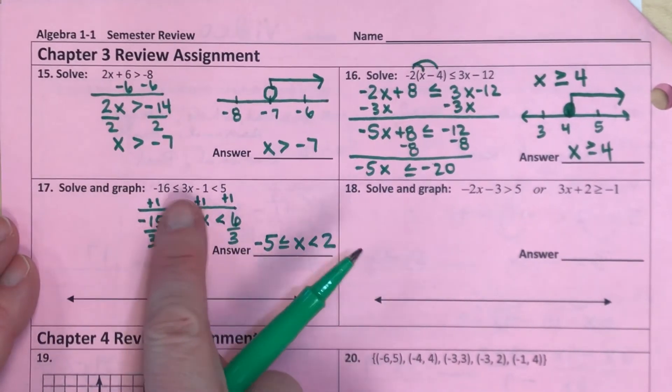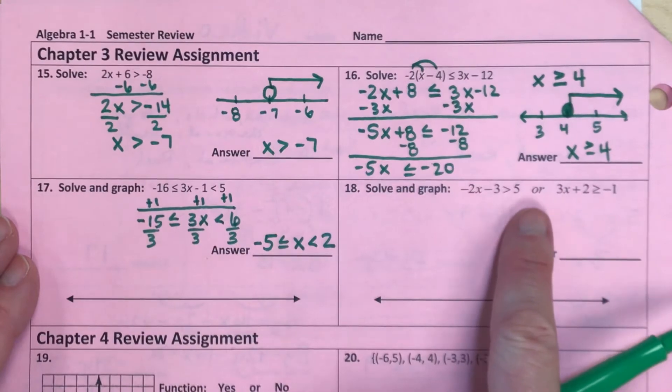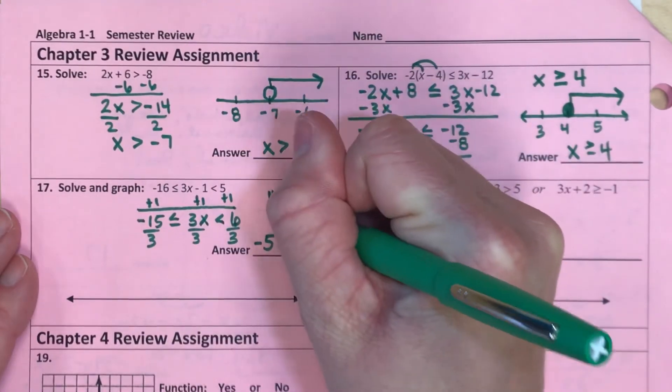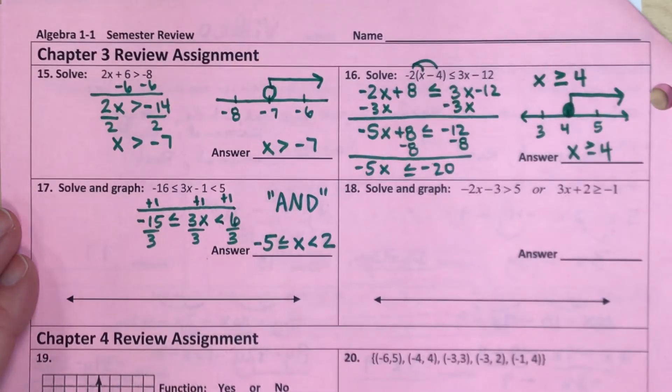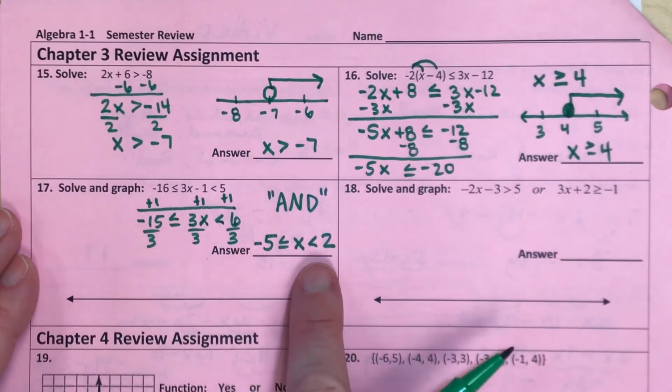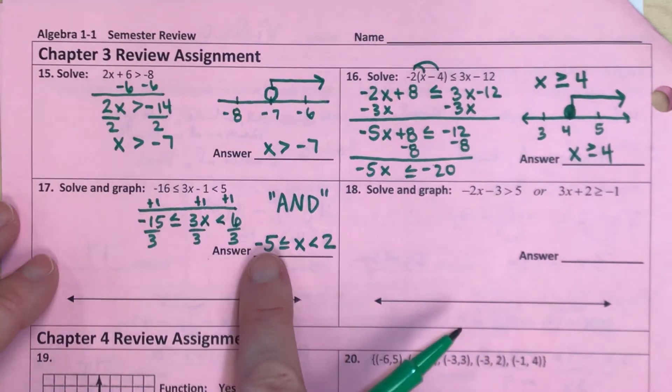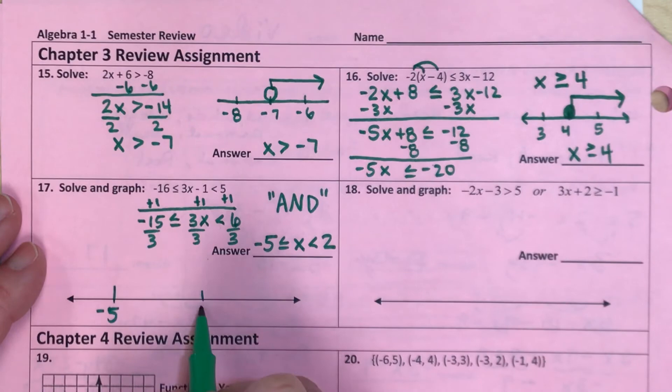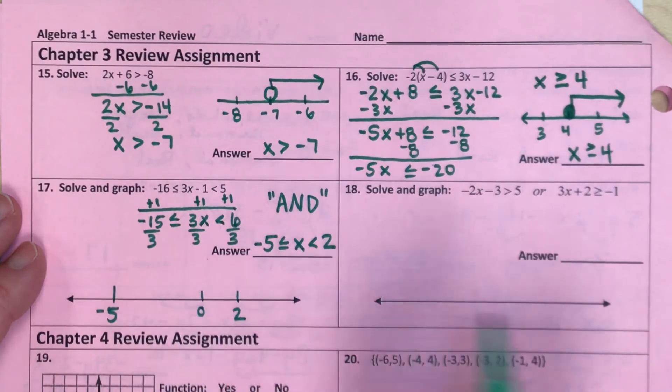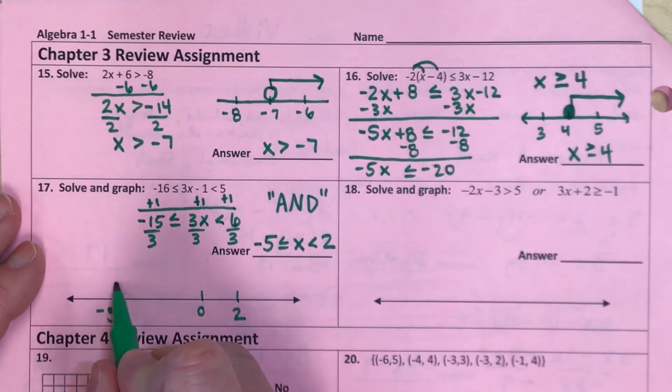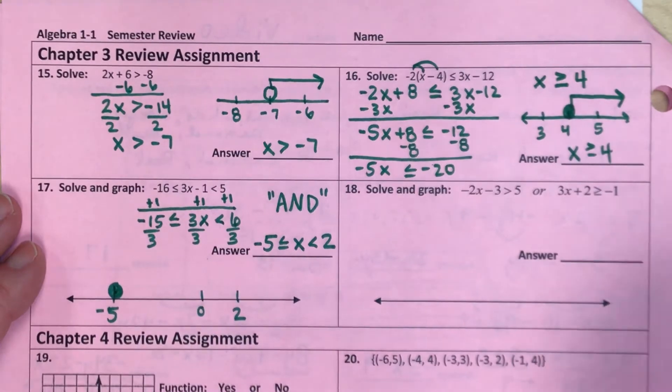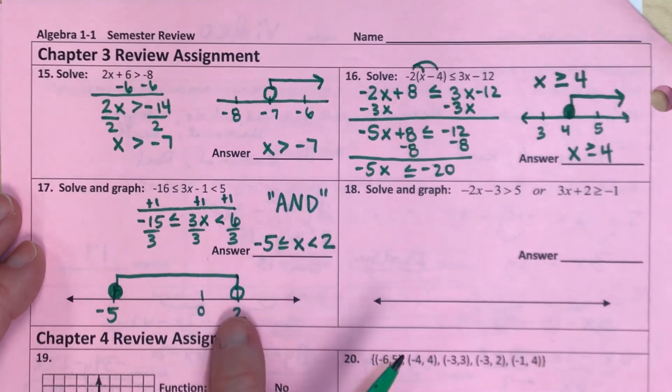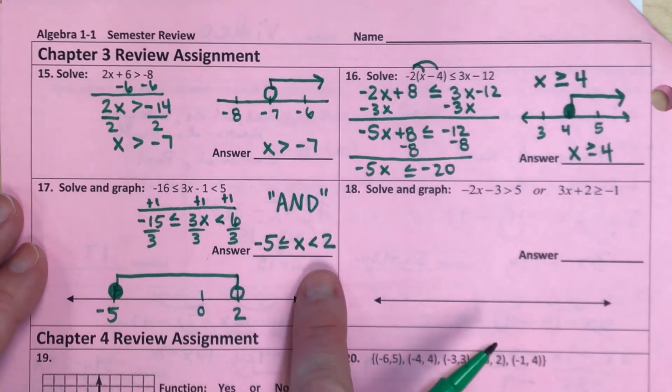Now, when you don't see the word or, notice how this compound says the word or. If you don't see that word, then that means this is an and inequality. And what we're going to do is shade in the middle of these two numbers. And it should go in order smallest to biggest. So negative 5 over here, 0 roughly here, and 2 roughly here. I'm going to fill in and bubble in negative 5. I'm going to shade towards 2, but the circle at 2 is going to be open. Because this does not also say equal to.